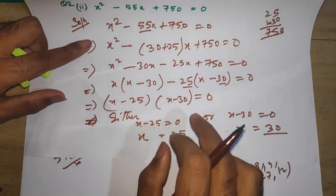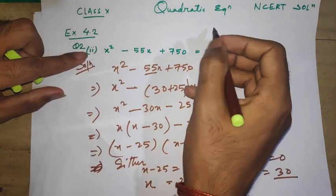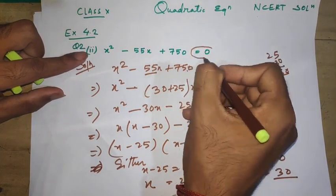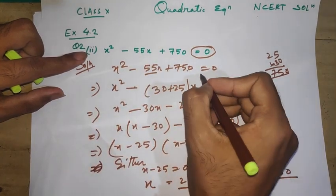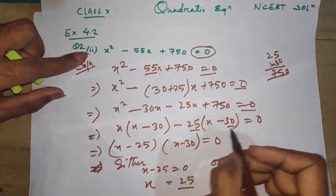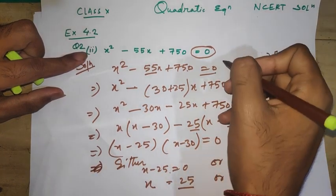So x = 25 or x = 30. That's our value of x. If you don't write certain steps in the question, this is the same procedure.